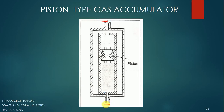The fluid enters from the bottom and occupies the lower portion of the casing. The fluid which is present in that area cannot go above the piston because a sealant material is used, so the fluid is confined to the lower area whereas the gas is present in the upper zone.